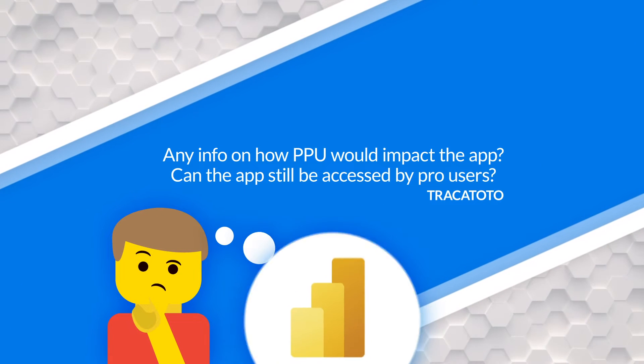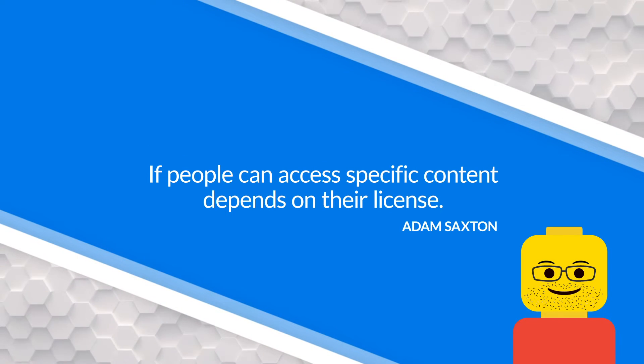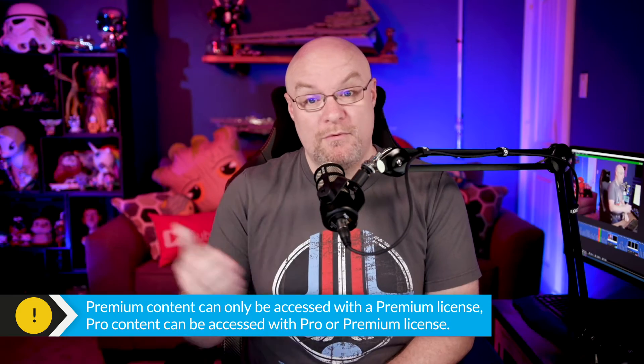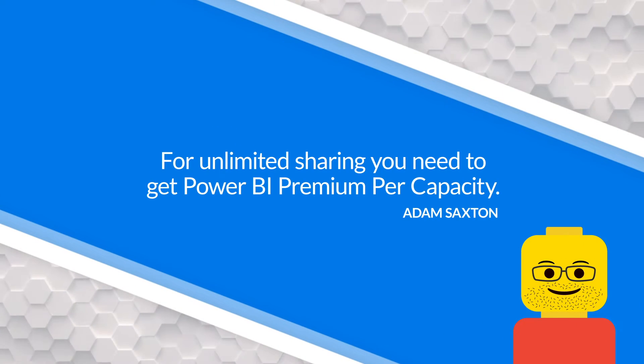Trackatoto asked: any info on how Premium Per User impacts the app? Can the app still be accessed by Pro users? It's about the license type. If it's a Premium Per User workspace and you publish that app, the folks accessing it also need a Premium Per User license. Whereas with a Pro workspace, people would need either a Pro or Premium Per User license. Think of Premium Per User as a superset of Pro. Amiraj noted they wished it included unlimited sharing — but as Chris Finlan pointed out, if you want unlimited sharing, you need the capacity. That's a key difference.